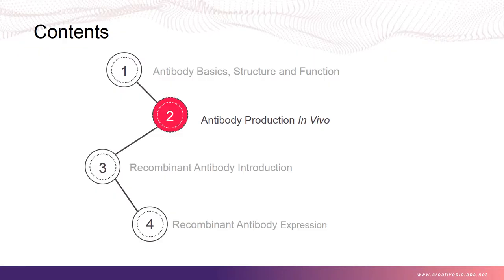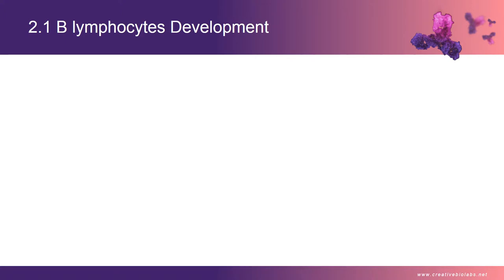The second part of the presentation is antibody production in vivo. In this part, we mainly focus on antibody diversity and antibody gene rearrangement. Antibody diversity is produced in B-lymphocyte development, so before we present gene rearrangement, we should learn about B-cell development.